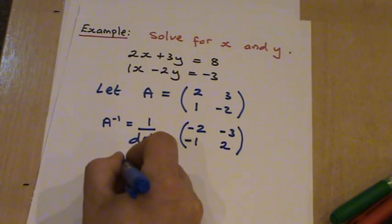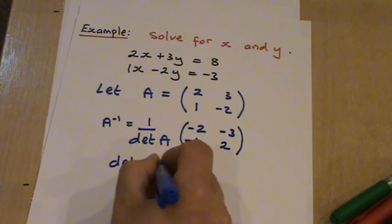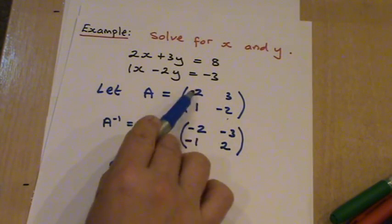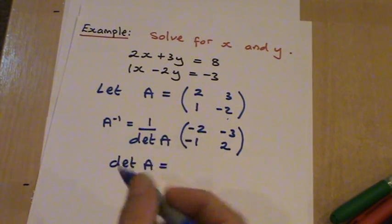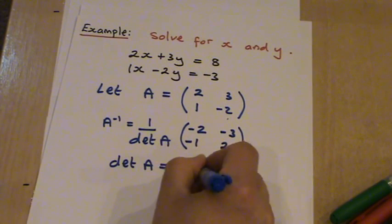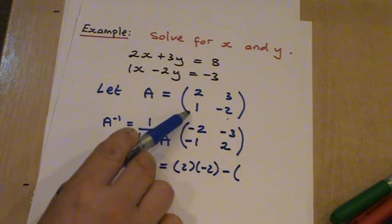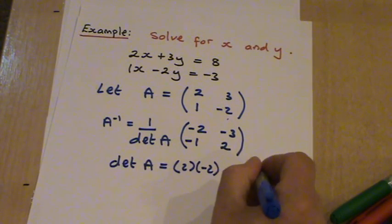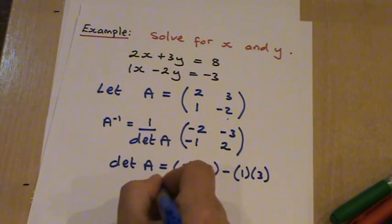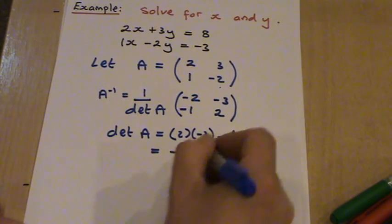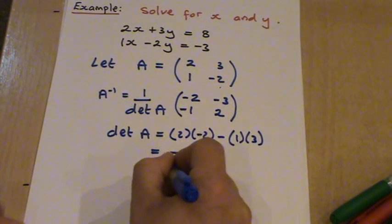And the determinant of A, let's start using the matrix A, and we have to multiply the two terms on the leading diagonal. So 2 times minus 2, then it's minus 1 times 3. And this gives you minus 4, minus 3, which is minus 7.